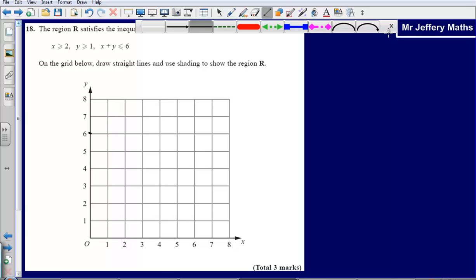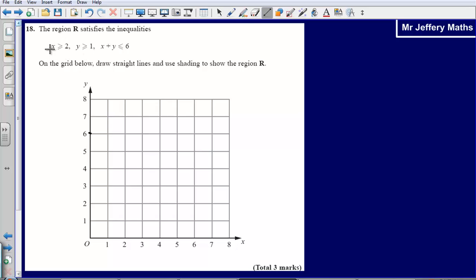So the first thing that I'm going to begin doing here is I'm going to draw straight lines to represent each of these inequalities. So first, x is greater than or equal to 2. So I find where x is 2, and so what I can say is that my answer is going to be greater than or equal to 2. So my answer is going to be on this side of the graph.